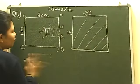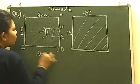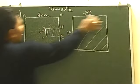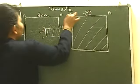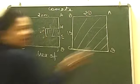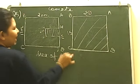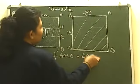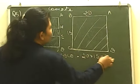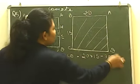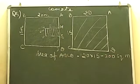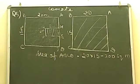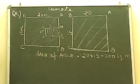May I know from you what will be the area of rectangle ABCD? Tell me faster. Very good — it will be 20 into 15, which gives us 300 square meters. Since the question was in meters, the area is 300 square meters.